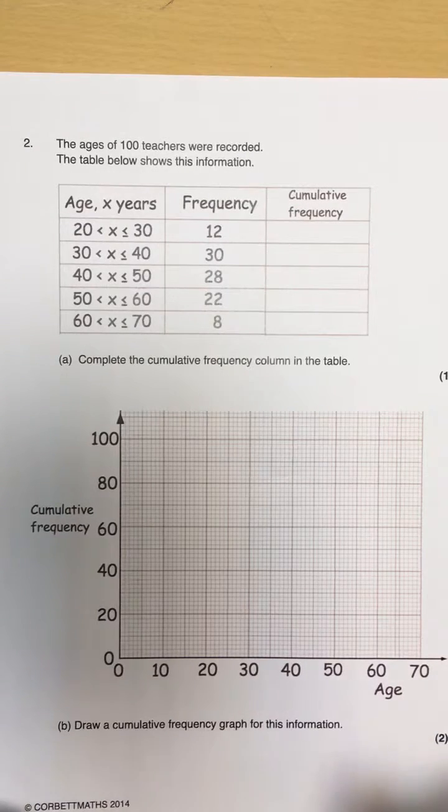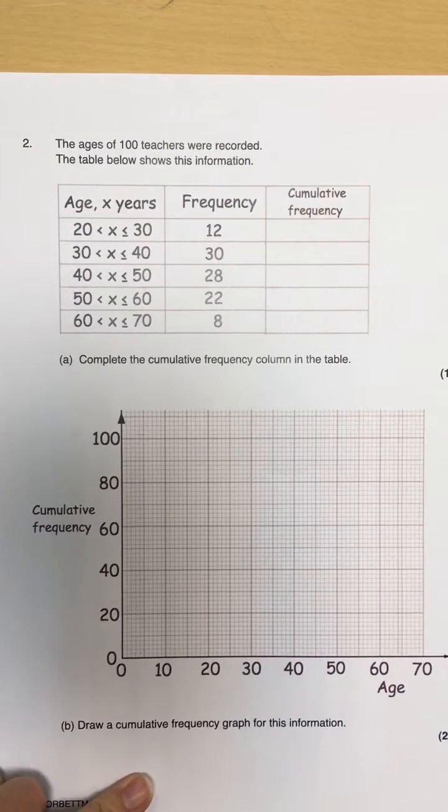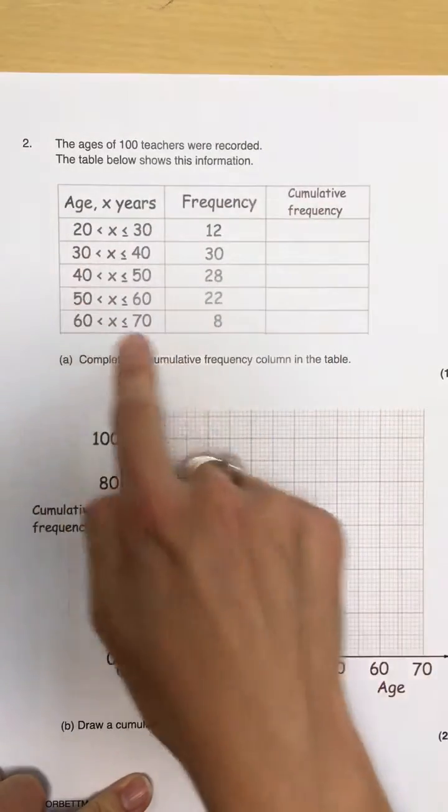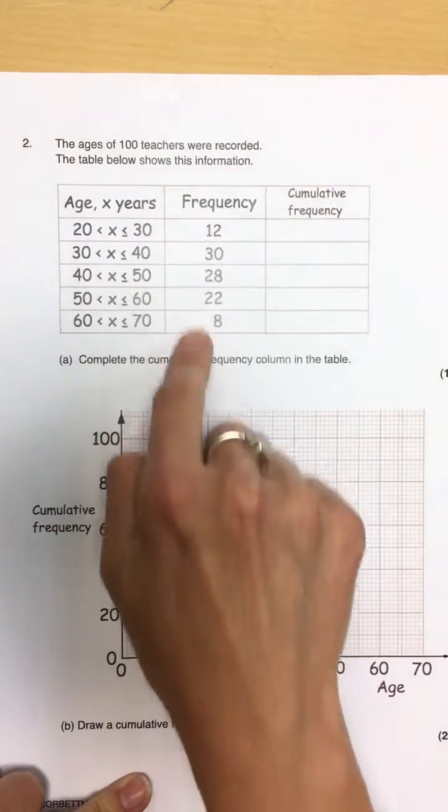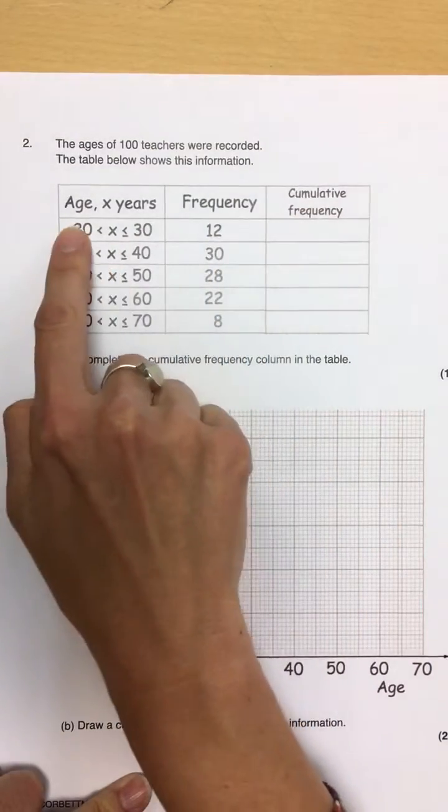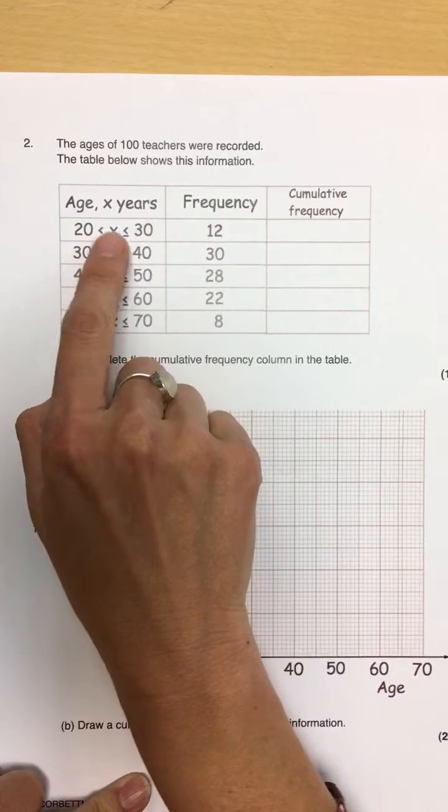This tutorial explains how to draw a cumulative frequency graph. When you are asked to draw a cumulative frequency graph, the first thing you're going to see is that you are given a grouped frequency table. That means that the frequencies are grouped into groups.